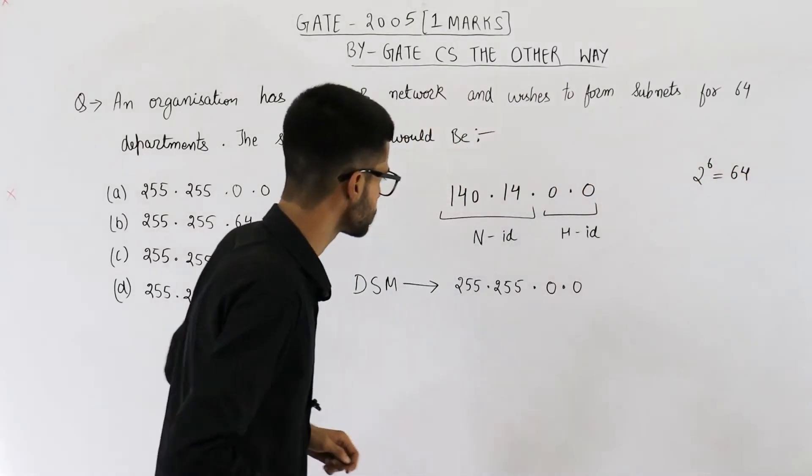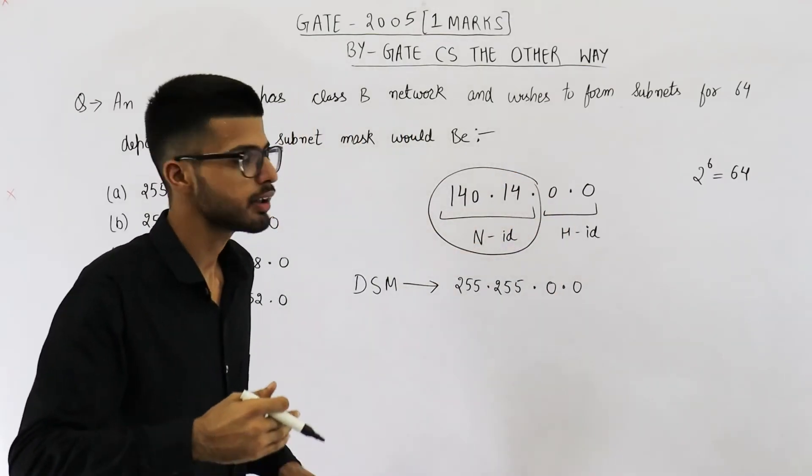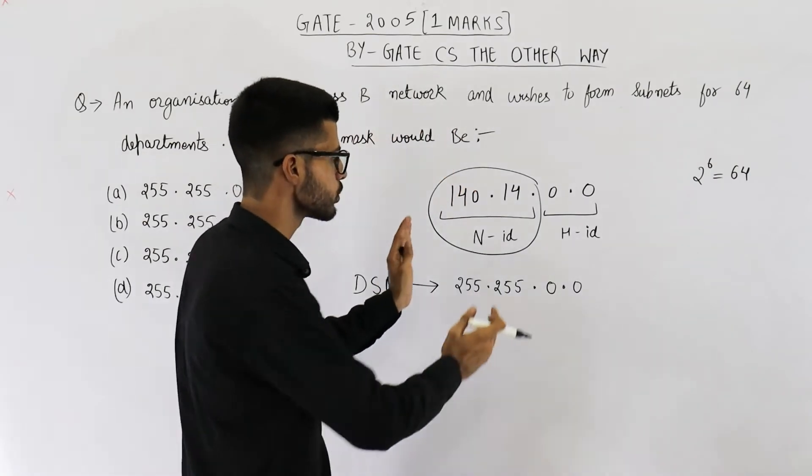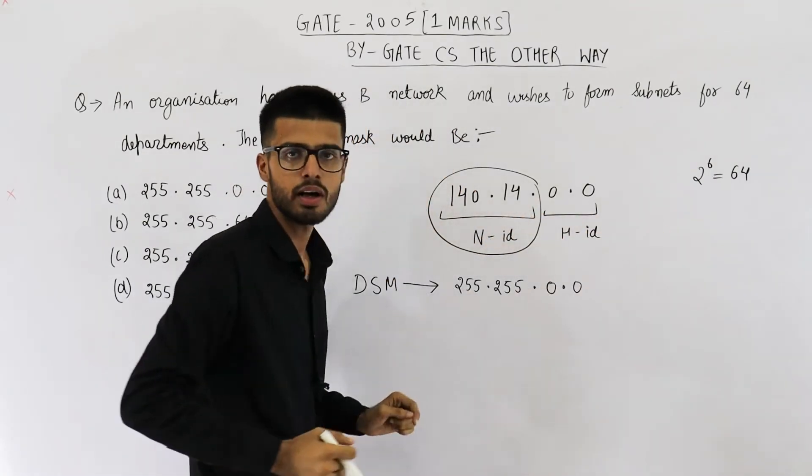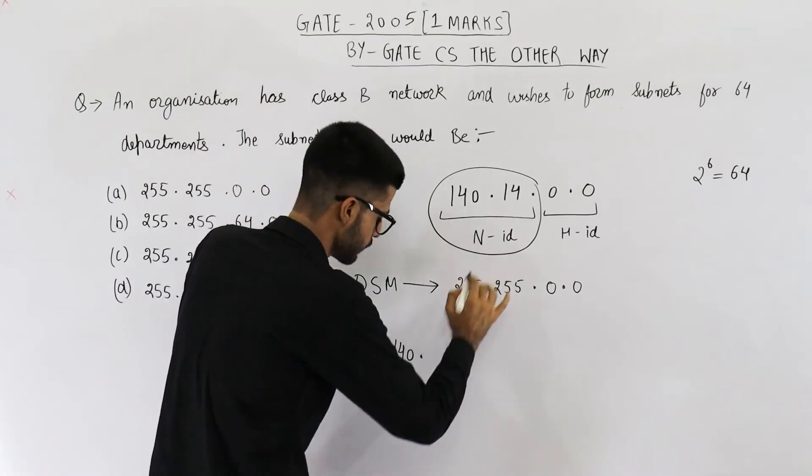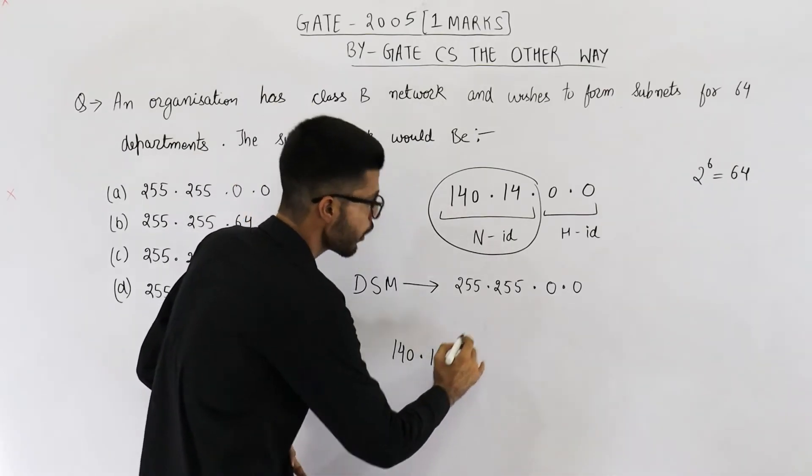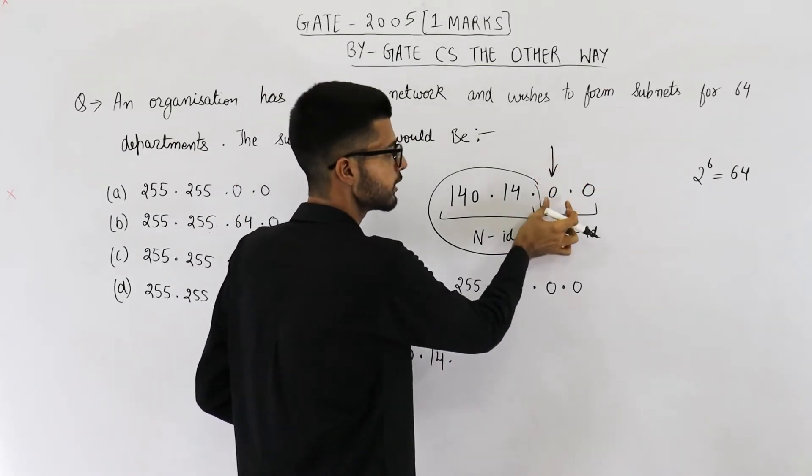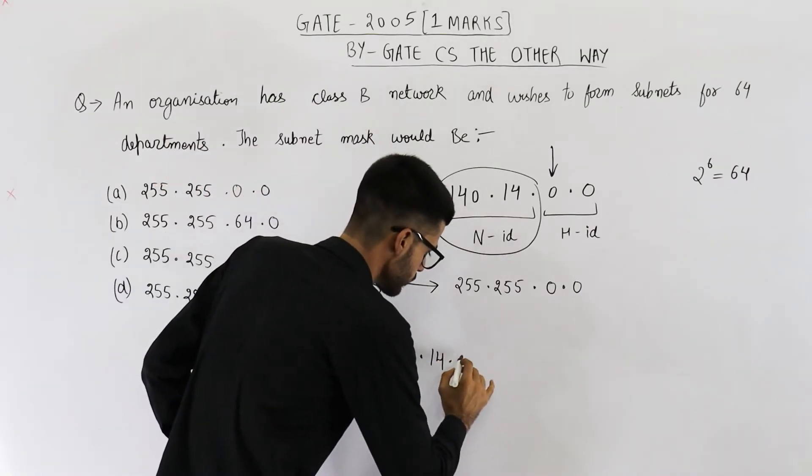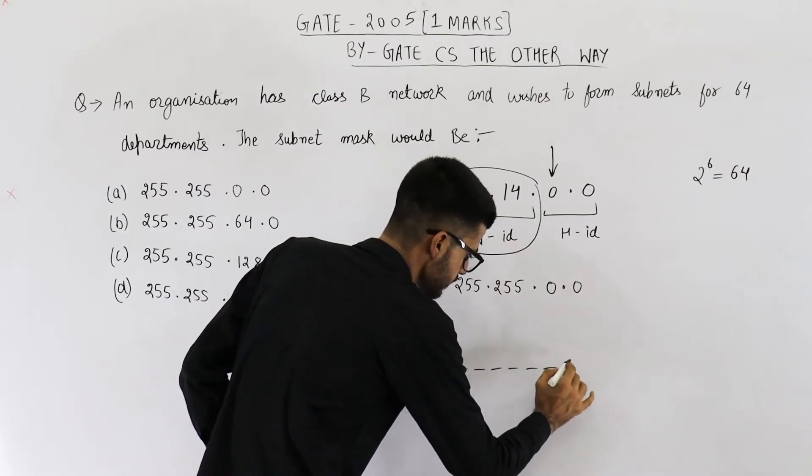That means in addition to these 16 bits, you need six more bits in network ID part. So we will expand this network ID by six more bits. Already we have 140.14 in network ID only. Now from this octet, these are actually eight bits. From this octet, I am borrowing six more bits. So one, two, three, four, five, six.